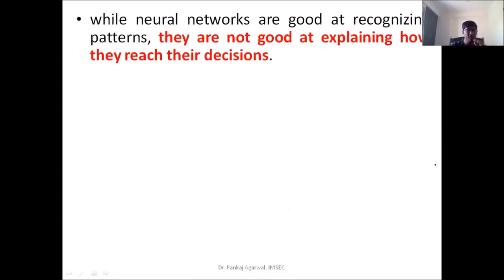Neural networks are very good at finding and learning patterns, and they are also good at clustering inputs. However, neural networks are not very good at explaining how they reach their decisions. We don't know the algorithm or the logic — it is just a kind of function approximation method. That is where neural networks may not be effective when we need to explain how they reach a solution.